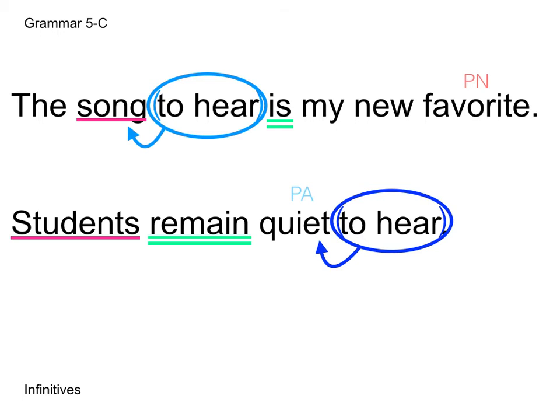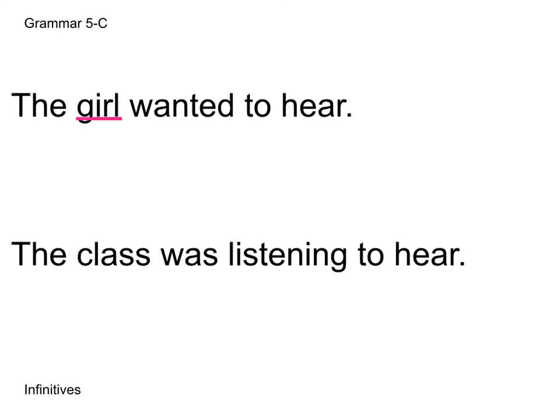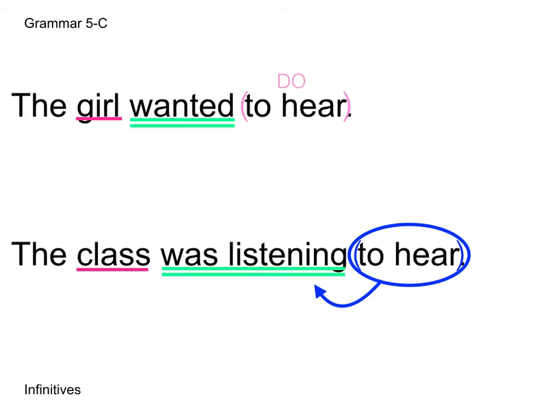Next: 'The girl wanted to hear.' The subject is girl, the verb is wanted, and 'to hear' tells us what the girl wanted — it's acting like a noun, functioning as our direct object, receiving the action of being wanted. So I'll put DO over the infinitive. Then 'The class was listening to hear.' Class is our subject, 'was listening' is our verb phrase. 'To hear' modifies why the class is listening — it's an adverb, and the arrow goes to the main verb, not the helping verb.